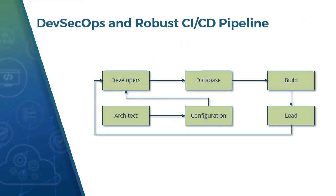Now we take a case study of DevSecOps and a robust CI-CD pipeline. Work starts with developers who write code that may involve database as well as application blocks. Developers need to ensure they perform all quality tests irrespective of artifacts. To do that, certain configurations called test configurations are needed, which look into various perspectives of testing artifacts, including security. All configuration guidelines are provided by the architects.